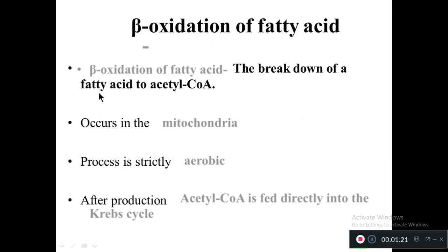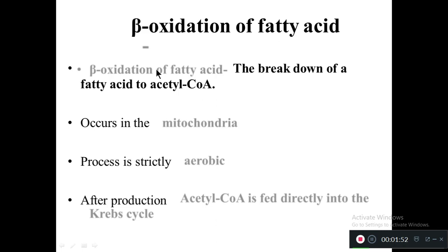Beta oxidation of fatty acids is the breakdown of fatty acid to acetyl-CoA. It occurs in the mitochondria and this process is strictly aerobic. After production, acetyl-CoA is fed directly into the Krebs cycle or citric acid cycle.